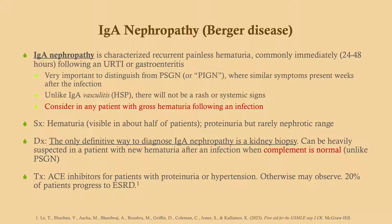It's very important to distinguish IgA nephropathy from post-streptococcal or post-infectious glomerulonephritis because they have similar symptoms. The key difference is that post-strep presents weeks after the infection, whereas IgA nephropathy presents within days. Unlike IgA vasculitis or Henoch-Schönlein purpura, there will not be a rash or systemic signs. IgA nephropathy is just kidney, whereas HSP involves many other systems too.